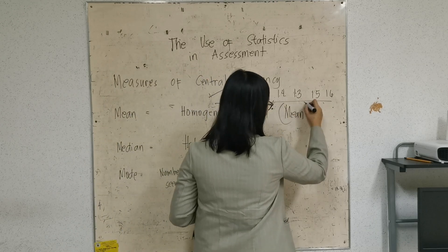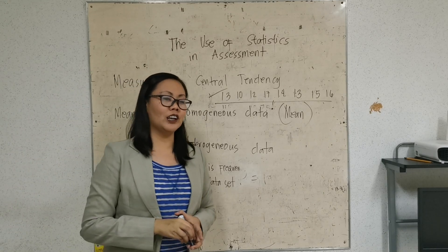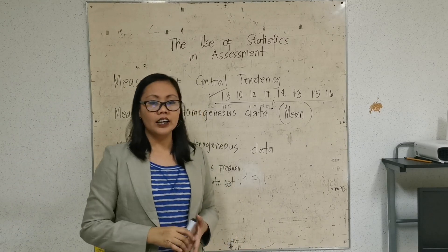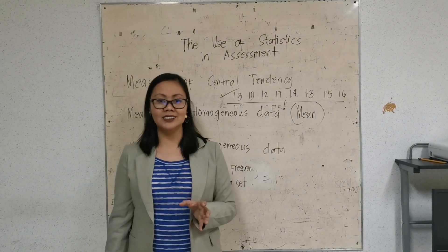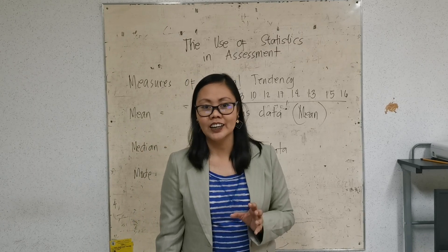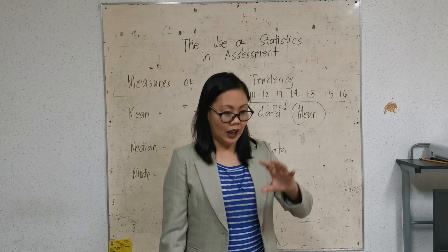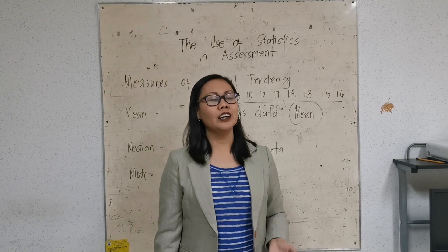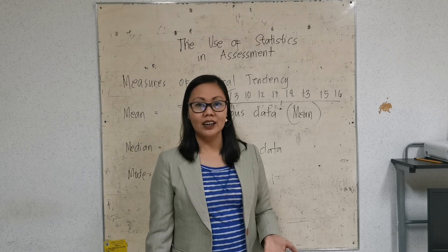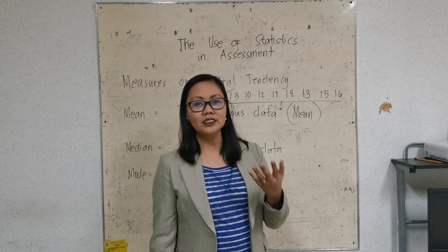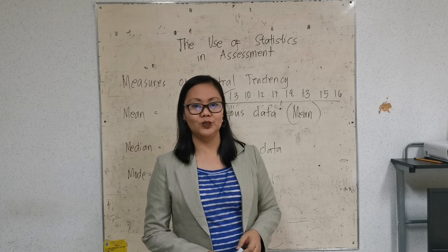This is frequently asked in licensure examinations. There are questions like: if the data is homogeneous, what is the best measure of central tendency? The answer is the mean — meaning you get the average score. Rephrasing, the mean is used when the data is homogeneous.